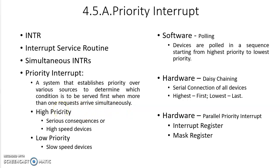All the devices connected to the CPU are given priority. Highest priority will be given to devices whose interrupt request cannot be ignored, which would result in serious consequences, or to high-speed devices. Lower priority will be given to devices with lower speed, like the keyboard. This is the priority interrupt concept.